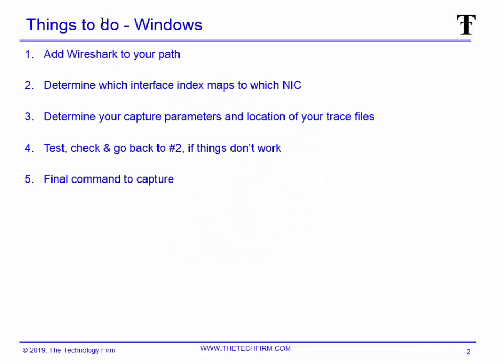Here are the things to do. First, we need to make sure Wireshark is in your path. We're going to determine which interface index maps to what NIC on your machine — depending on your configuration, you'll have a ton of adapters or maybe one or two. We're going to determine your capture parameters and the location of your trace files. Please pay attention to where your files go, because by default DumpCap will dump them in a temp folder, and you may run out of space from huge files scattered there.